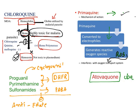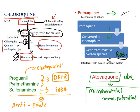Atovaquone is structurally similar to ubiquinone, a mitochondrial membrane protein. Because of this structural similarity, atovaquone changes the mitochondrial membrane potential of Plasmodium, causing the death of the protozoan.